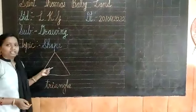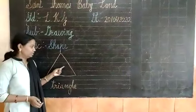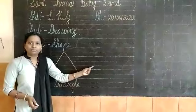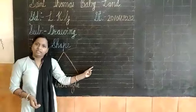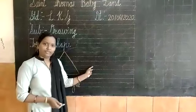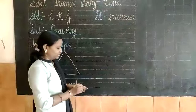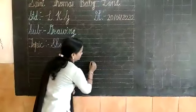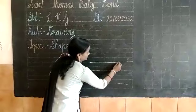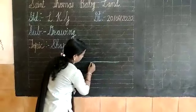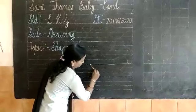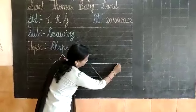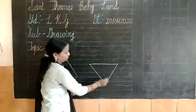Ok children. Now I will use this triangle to make a wonderful drawing. First make a slanting line and one slanting line, one more slanting line.